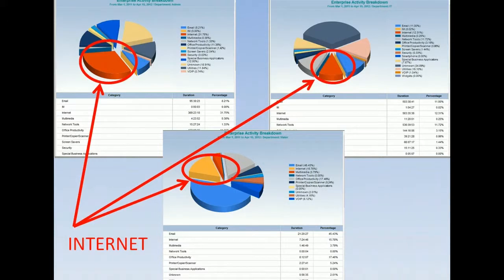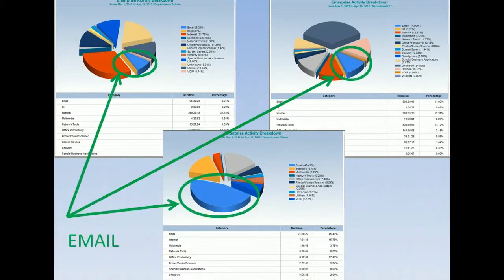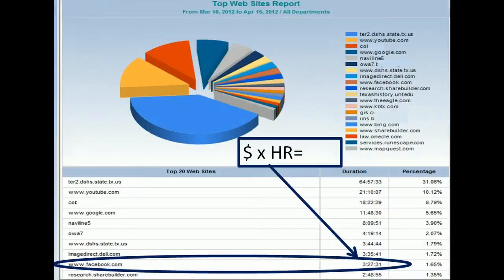You can compare usage across various departments to create great meeting discussion topics. Try looking at how much organizational time is spent on Facebook, Pinterest, or ESPN. Multiply by your average hourly cost and you will know the extent of problems, if any.